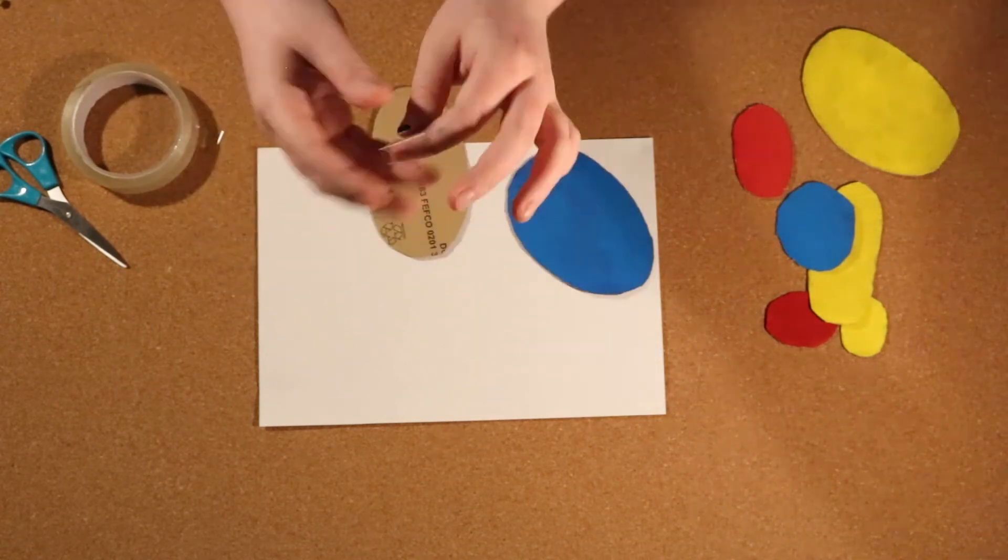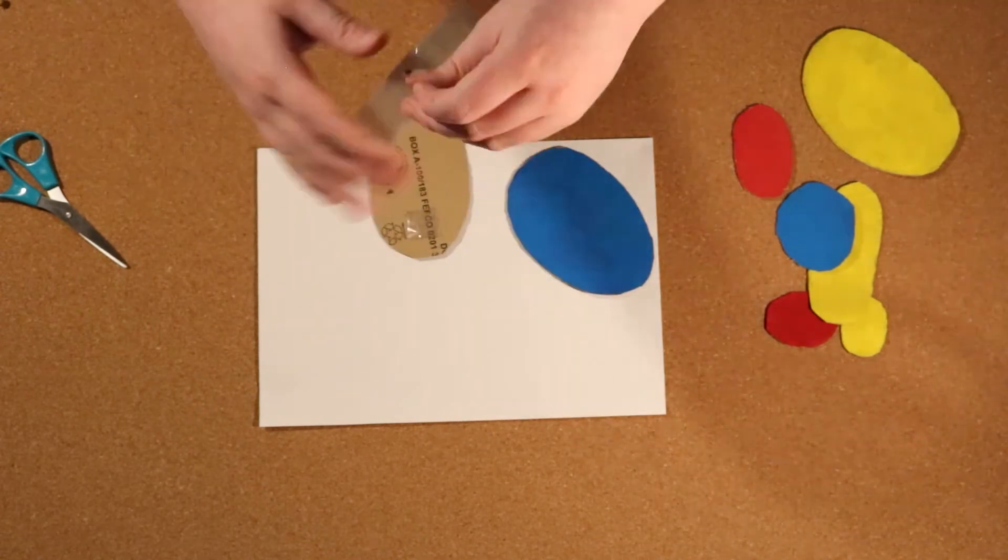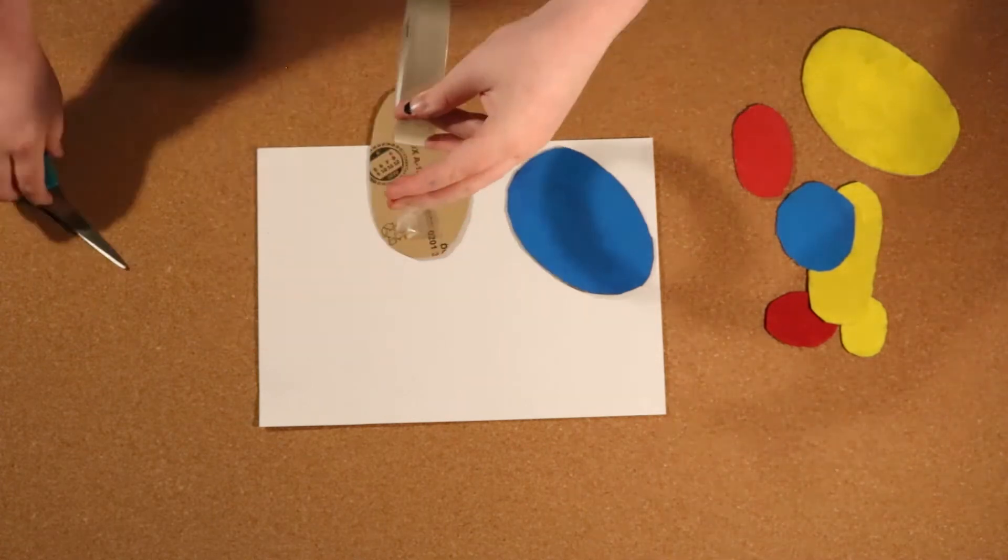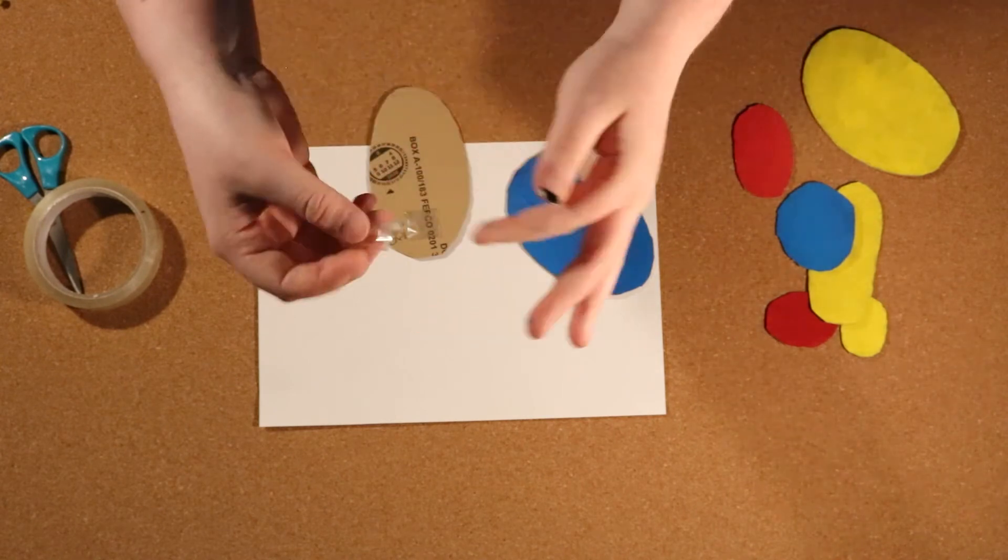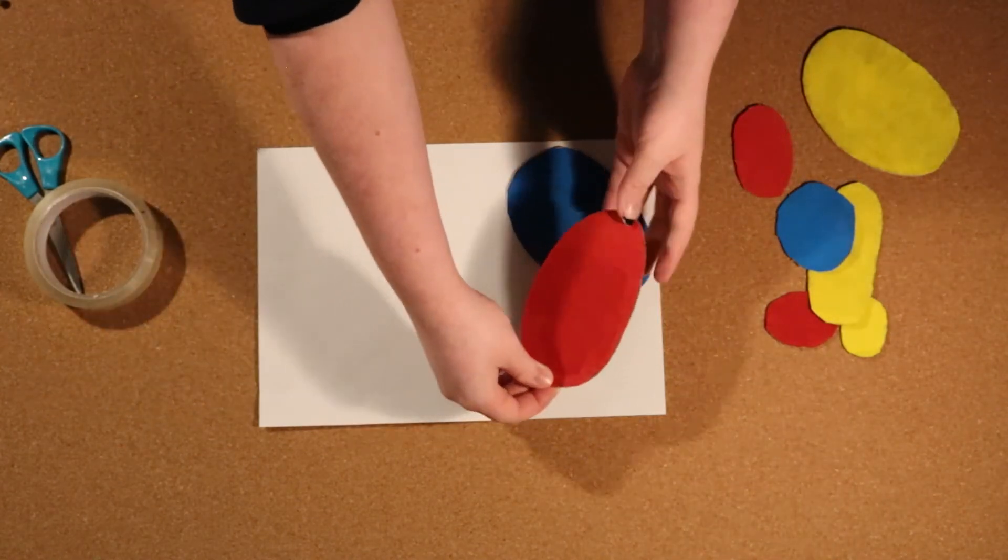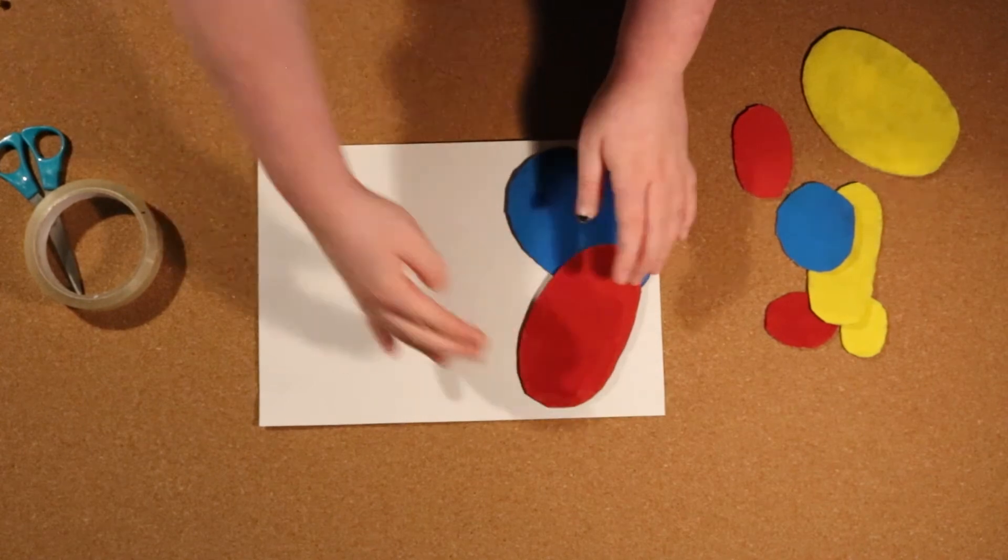Another thing you can do is use multiple bits of tape on a piece of card just to keep it down more secure. Or, if you're layering the shapes, you can have one bit on another shape and one bit on the paper itself just to make sure it stays.